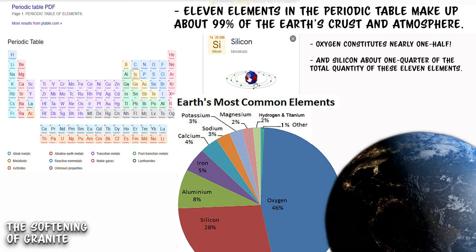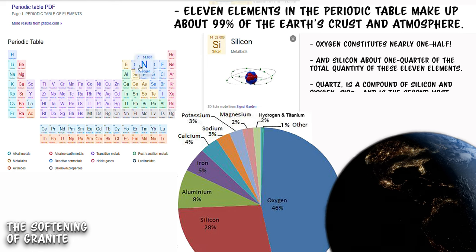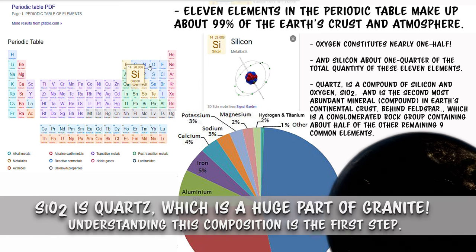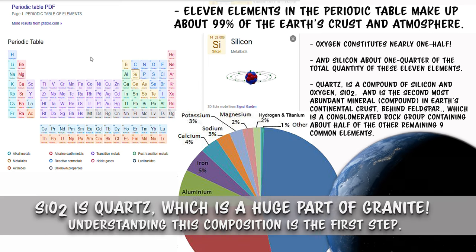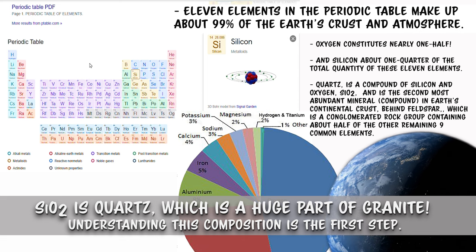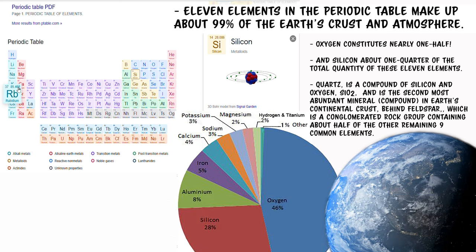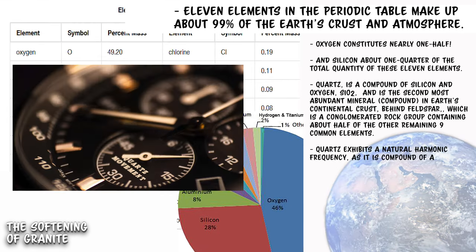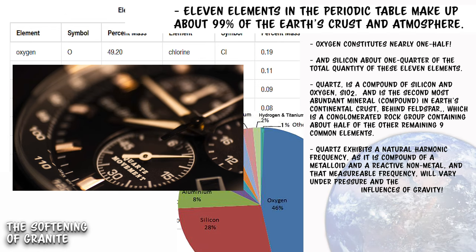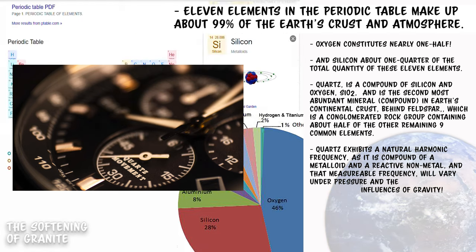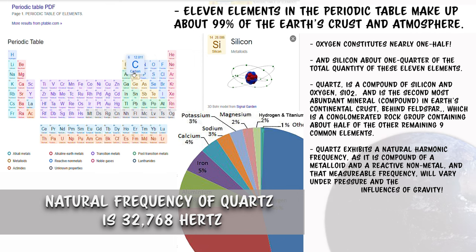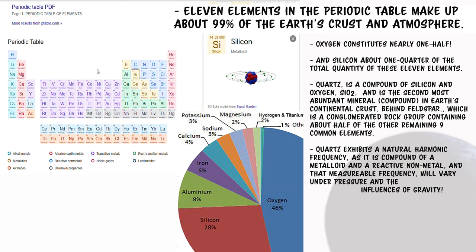We live on an oxygen and silicon world. And quartz is a compound of silicon and oxygen, SiO2, and is the second most abundant mineral compound on the Earth's continental crust behind felspar, which is a conglomerated rock group containing about one half of the other nine remaining common elements. Also, quartz exhibits a natural harmonic frequency as its compound of a metalloid and a reactive non-metal. And that measurable frequency will vary under pressure, the angles, and the influences of gravity. Do you remember these crazy facts from your former chemistry class?